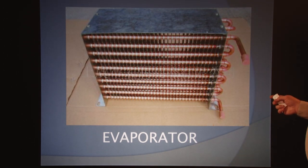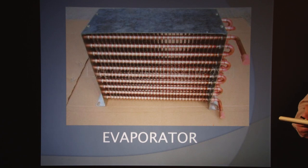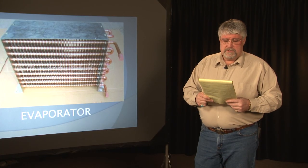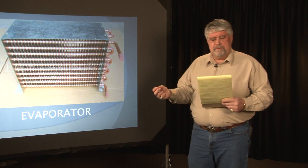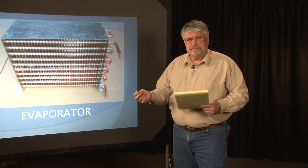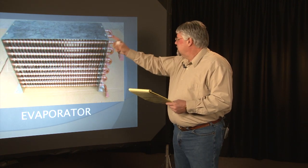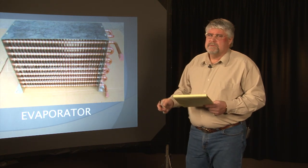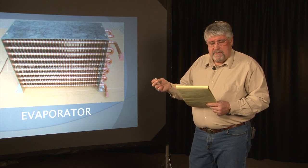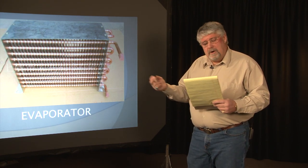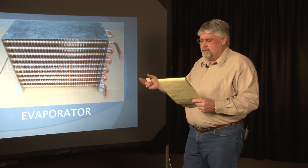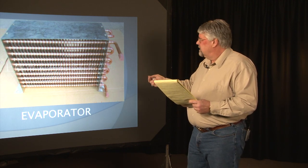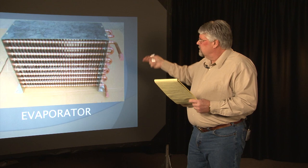This is an evaporator. The technical description of an evaporator is the part of the system in which liquid refrigerant is vaporized to produce refrigeration. This component is inside your cooling units — it's part of all cooling systems. This part in particular is where liquid refrigerant is vaporized to produce the refrigerant that goes into the lines.